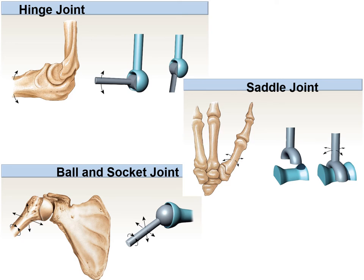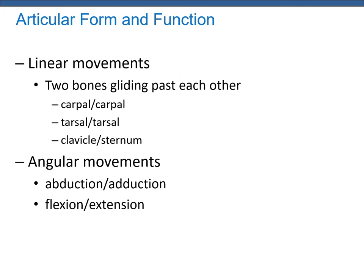The ball and socket joint allows the greatest degree of movement. Examples include the shoulder, where the humerus and scapula meet, or the hip joint, where the femur meets the coxal bone. The saddle joint is unique to humans—only one exists in the body—where the thumb meets the trapezium and allows for the movement called opposition, enabling us to grasp or grab things. Linear movements involve two bones gliding past each other, non-axial in nature, simply allowing for greater movements at other joints. Examples include the carpal bones of the wrist, the tarsal bones of the feet, or the clavicle and sternum meeting at the sternoclavicular joint.